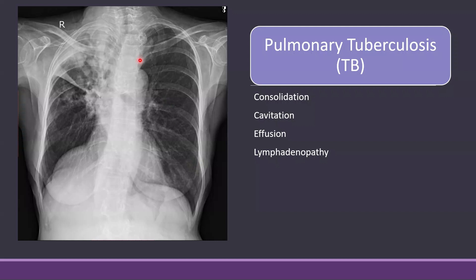An important feature of this consolidation is that the trachea is shifted toward the same side, and similarly the horizontal fissure — which is normally horizontal at the level of the hilum — is pulled up. This means that this is a chronic process. So we need to think about chronic causes of consolidation like tuberculosis, fungal infection, and other chronic infections.